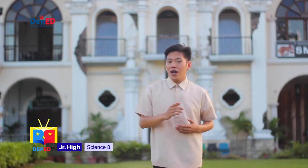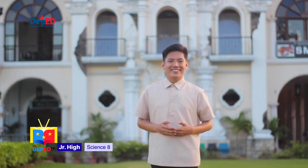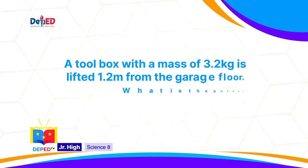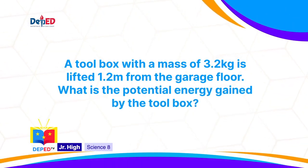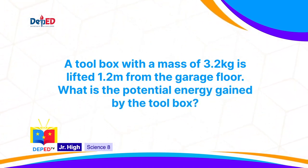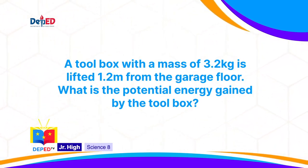Now do this problem independently. A toolbox with a mass of 3.2 kilograms is lifted 1.2 meters from the garage floor. Find the work done on the toolbox and the potential energy gained by the toolbox. You have a minute to solve it.